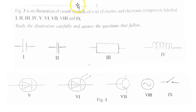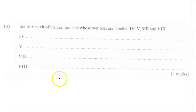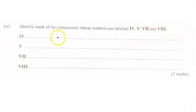Figure 3 is an illustration of circuit symbols of a set of electric and electronic components labeled I up to IX. We have to study the illustrations carefully and answer the questions that follow. Let's begin with question 1, that's part A. Identify each of the components whose symbols are labeled IV, V, VII, and VIII.